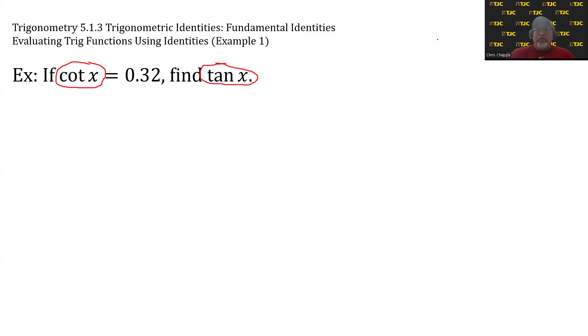The answer is pretty straightforward. Reciprocal identities. Cotangent and tangent are reciprocals, which means one is the reciprocal of the other. Specifically, tangent of x is the reciprocal of cotangent of x.